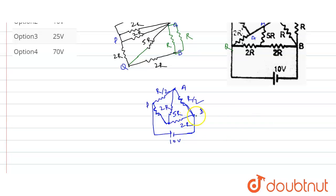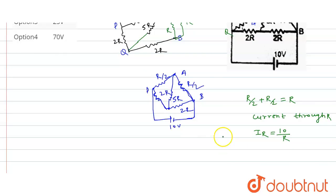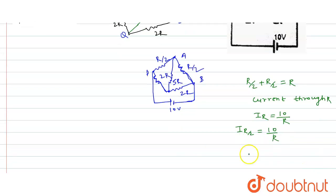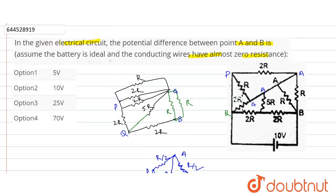Reducing this circuit gives a Wheatstone bridge network. Since the current through the 5R resistor is zero, the series equivalent of the resistors is R/2 plus R/2, which equals R. Current through R is equal to 10 upon R. Also, current through R/2 is equal to 10/R. So the potential difference between A and B: V = (10/R) × (R/2) = 5 volts.